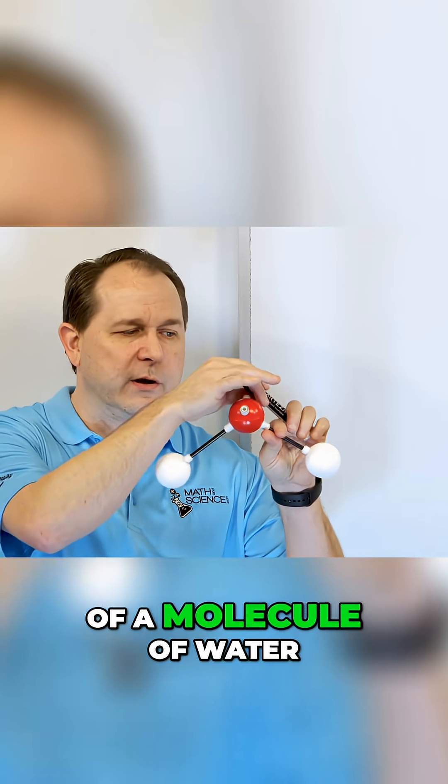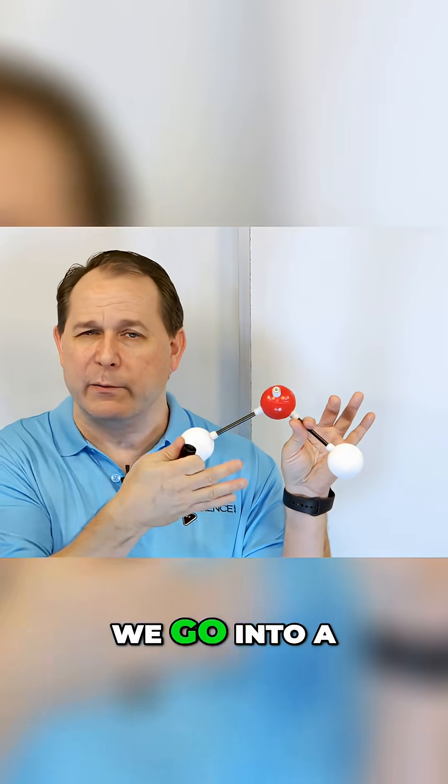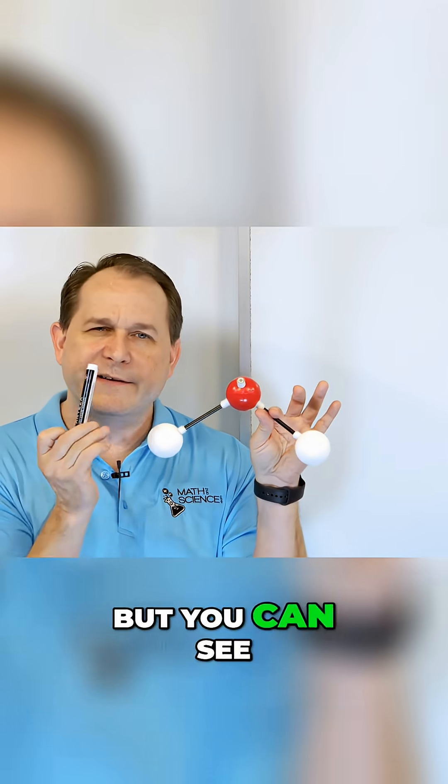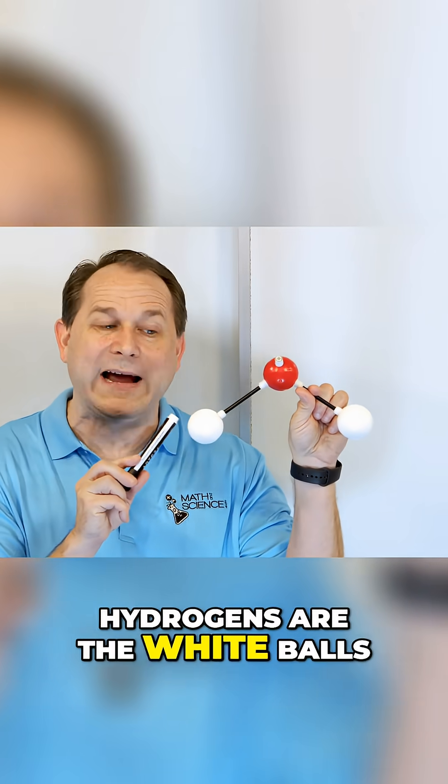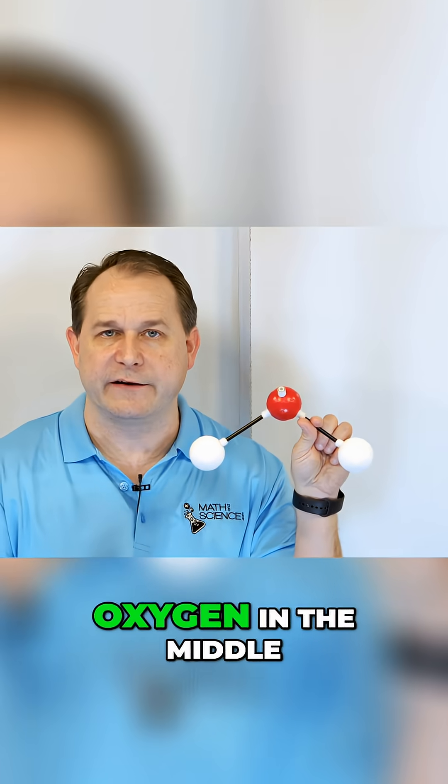Here is a model of a molecule of water. If you take my chemistry class, we go into a lot more details here. But you can see that here we have H2O. So we have two hydrogens. Hydrogens are the white balls. And we have one oxygen in the middle.